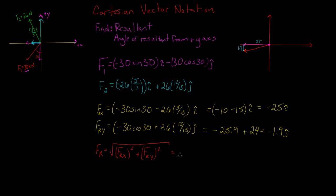And then this is going to be equal to the square root of minus 25 squared plus minus 1.9 squared. And because we're squaring a negative, it's going to be a positive which we need because we're using a square root, and we get that this is equal to 25.1 kilonewtons.